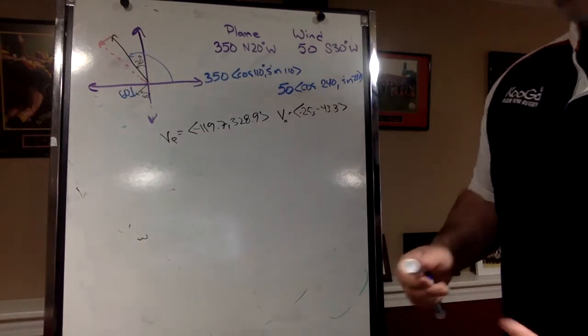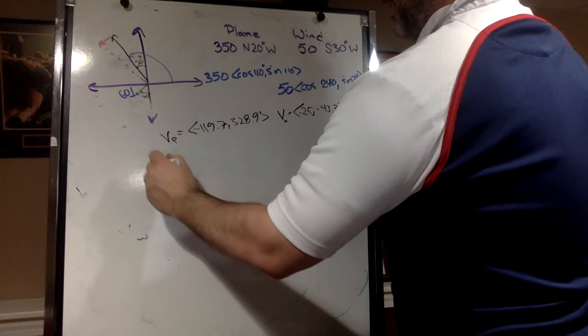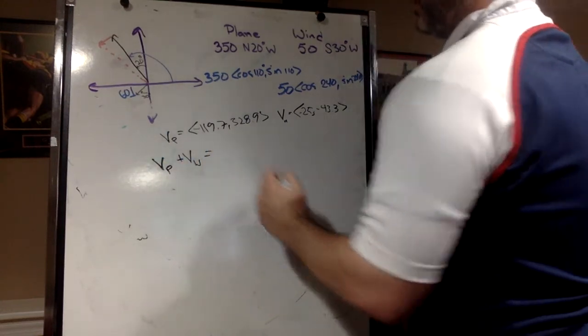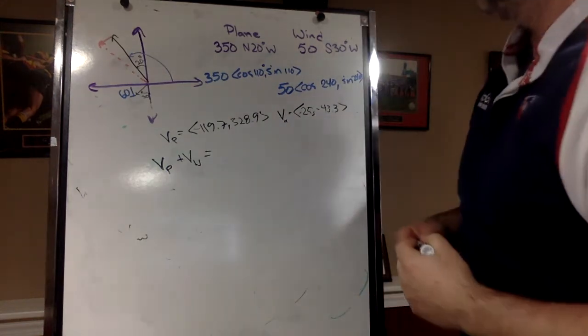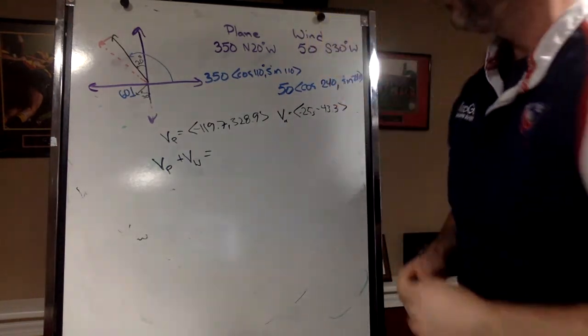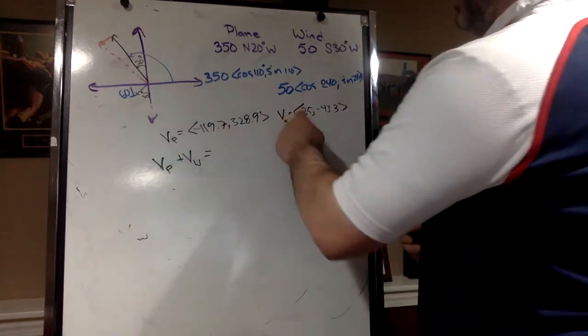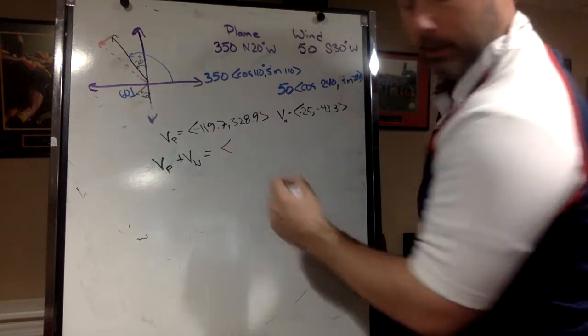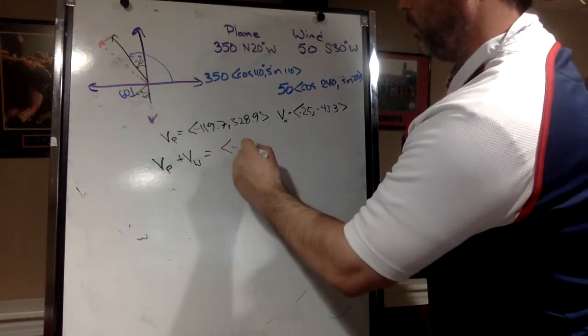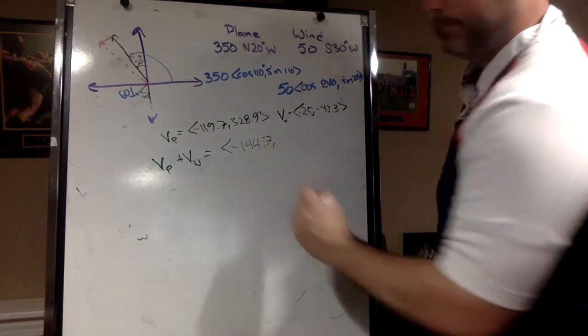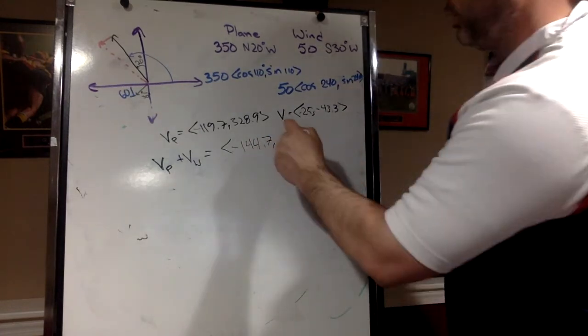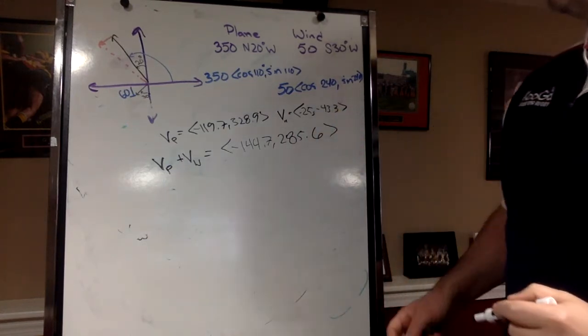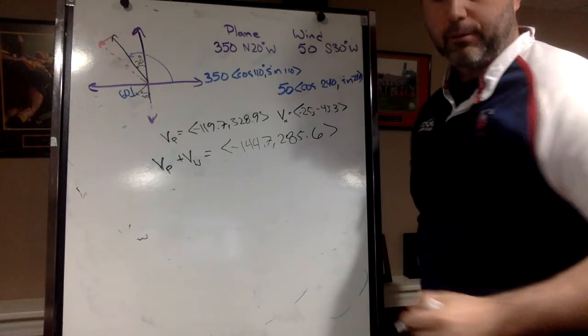Now how do I find my resultant vector? I'm literally going to add vp plus vw - vector of the plane plus vector of the wind. And literally, literally, that's what we're putting together - add the x's, add the y's, and you get negative 144.7, 285.6. Okay, that's my resultant vector. We could call that vr or whatever you want to call it.